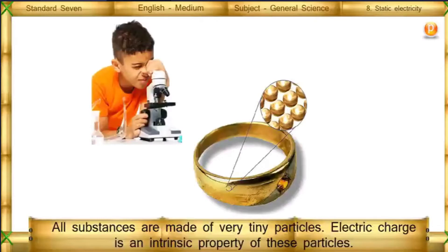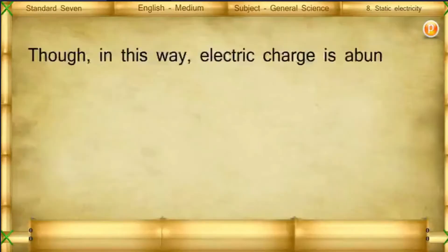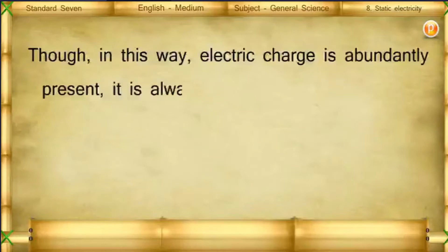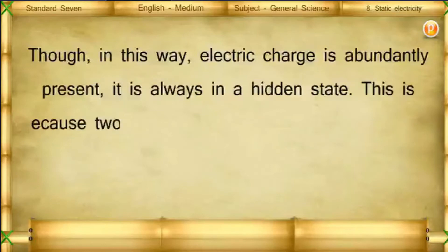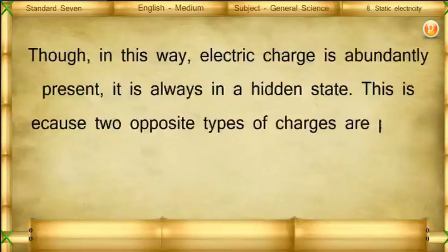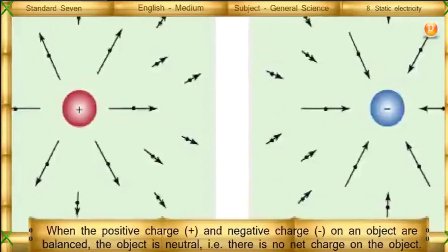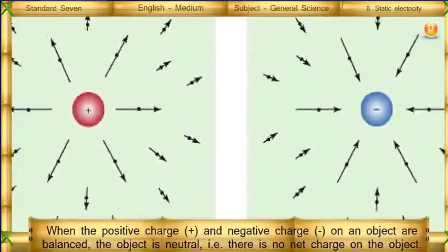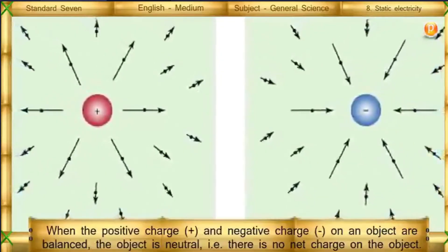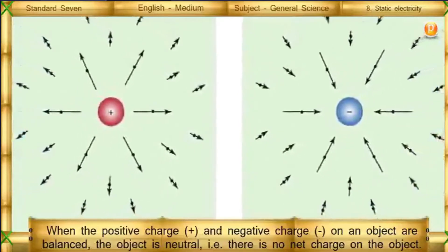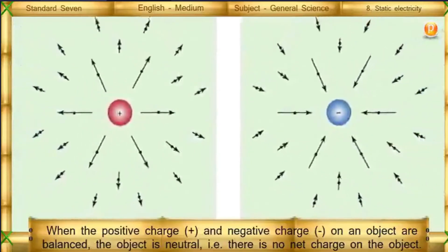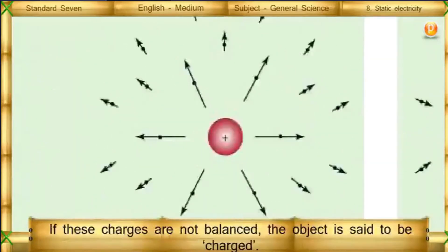All substances are made of very tiny particles, and electric charge is an intrinsic property of these particles. Though electric charge is abundantly present, it is always in a hidden state. This is because two opposite types of charges are present in equal numbers in all substances. When the positive charge and negative charge on an object are balanced, the object is neutral — there is no net charge on the object.